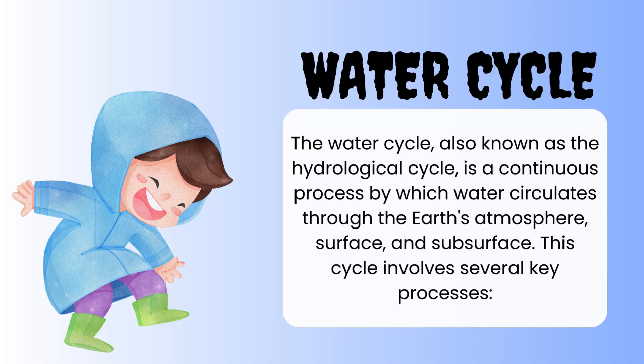The water cycle, also known as the hydrological cycle, is a continuous process by which water circulates through the Earth's atmosphere, surface, and subsurface. This cycle involves several key processes.